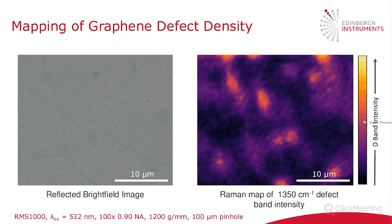On this colour plot, the dark background means very low defect density — essentially perfect pristine graphene — while the bright regions have a high 1350 peak, indicating defects are present. This demonstrates how confocal Raman microscopy can image the location and density of defects, and from this information you can determine whether the defect density is suitable for your application, or whether you need to refine your synthesis procedure to optimize defect distribution.